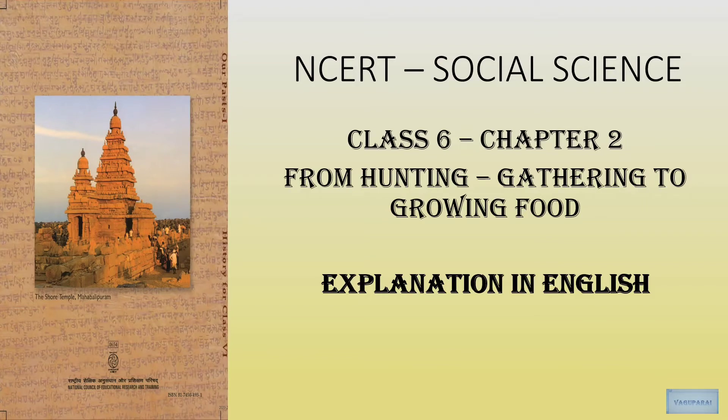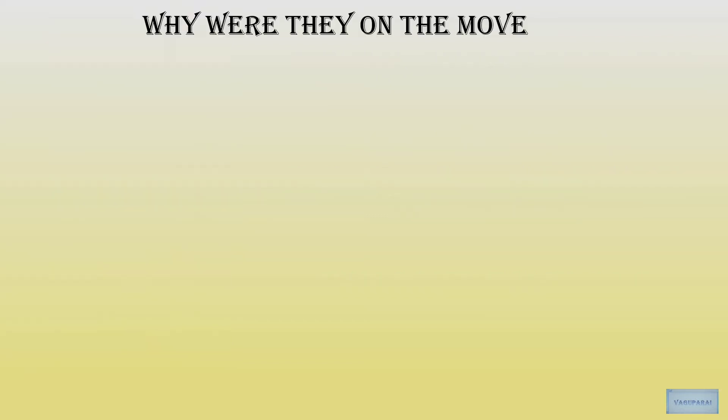NCERT Social Science Class 6, Chapter 2: From Hunting Gathering to Growing Food. We will now get into the chapter. Where did early man come from? Why were they on the move? We have to know all this.